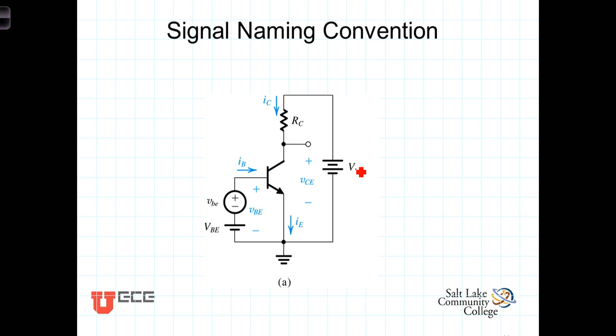In this case uppercase V, and then the subscripts are also uppercase. So this DC source here is uppercase V, uppercase CC, and the other DC source is uppercase V with uppercase subscripts.